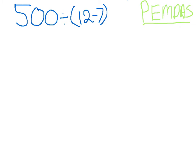Another problem using order of operations is five hundred divided by twelve minus seven. Twelve minus seven is five.